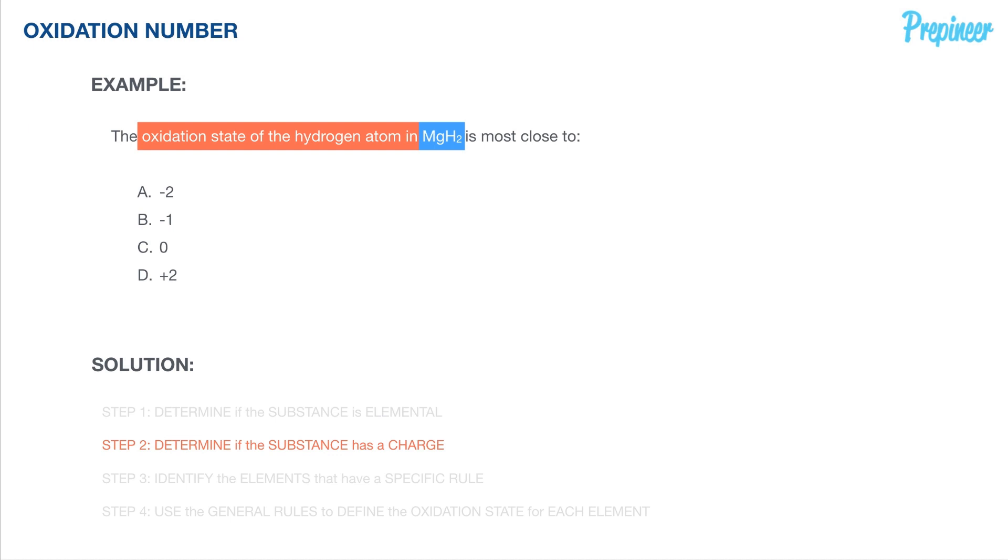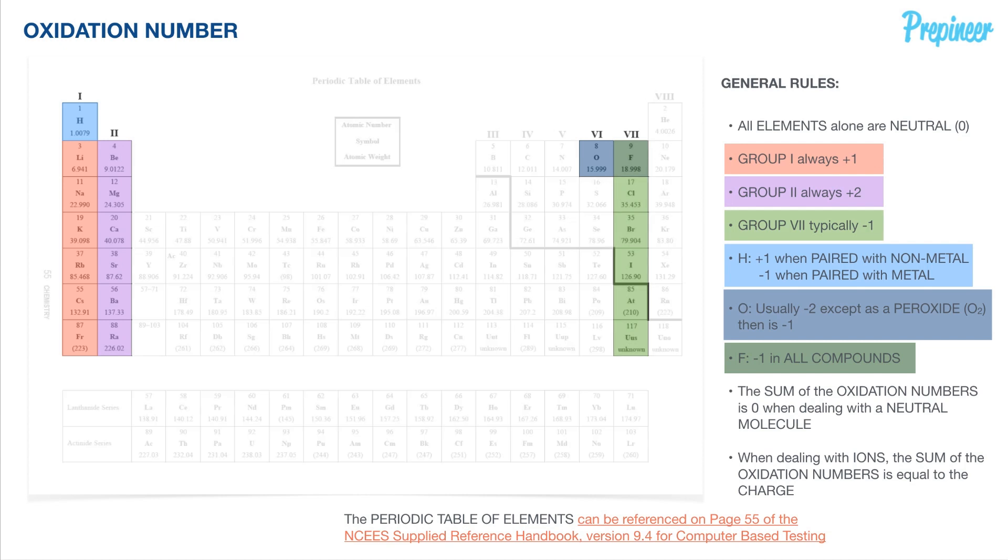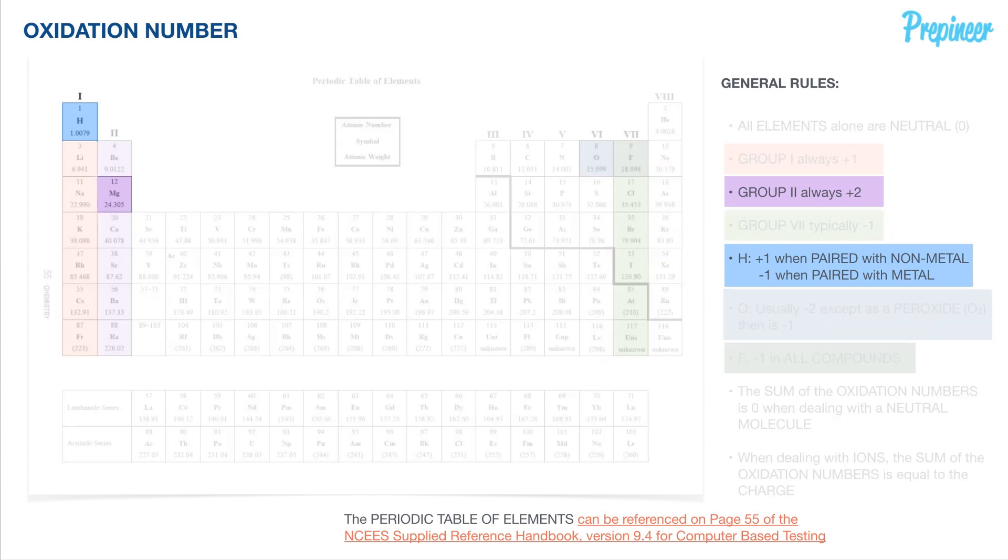So we will move on to step number three to identify the elements that have a specific rule. So if we hop back to our general rules that we laid out earlier on our periodic table. Again, these rules are not provided to us in the NCES reference handbook. However, they are very simple to memorize, especially through repetition. And that's what we'll be doing in this session. So those are our general rules. We have magnesium and we have hydrogen. So I highlighted both of those elements as well as both general rules that apply to them.